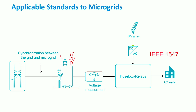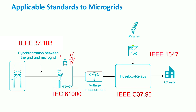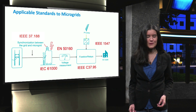IEEE 1547 provides criteria and requirements for interconnection between distributed energy resources and the main grid. IEEE C37.95 describes the protective relaying of utility consumer interconnections. IEC 61850 covers general conditions and rules necessary for achieving safety function and integrity requirements related to electromagnetic compatibility. IEEE 37.188 is the IEEE standard for synchrophasors in power systems. Finally, EN50160 describes the voltage characteristics of the electricity supplied by public distribution networks.